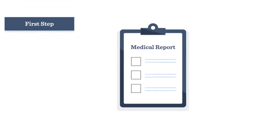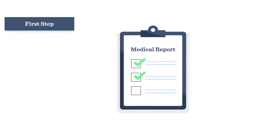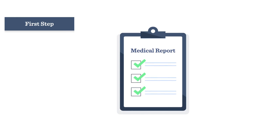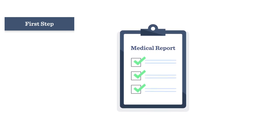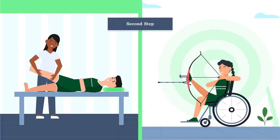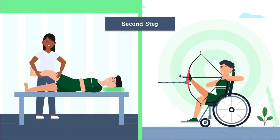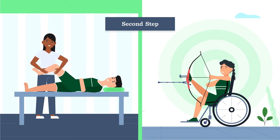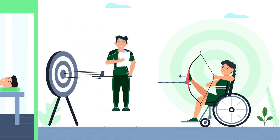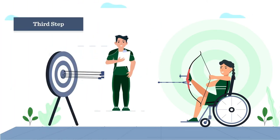The classification process is divided into the following steps. First, athletes must provide medical documentation relevant to their impairment in advance of classification. Second, athletes that have an eligible impairment are invited to attend a face-to-face evaluation, which consists of an impairment-specific physical assessment and a sport-specific technical assessment. Third, athletes must give their best effort during the process. Some athletes might also be required to be observed in competition.